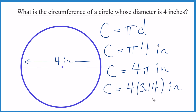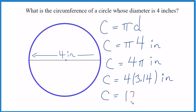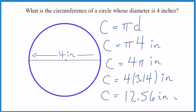I've rounded pi to three digits here, and we end up with 12.56 inches. If we'd started out with centimeters, it would stay centimeters throughout — so a circumference for a circle whose diameter is four centimeters would be 12.56 centimeters.